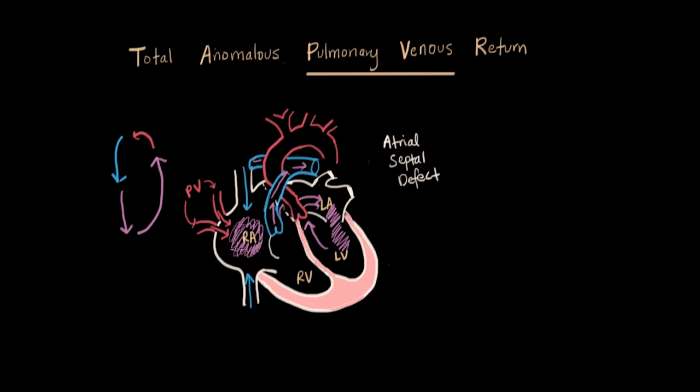So this closed system has to be opened. And that's why we have the ASD here, to allow the mixed blood into the left side so we can survive.